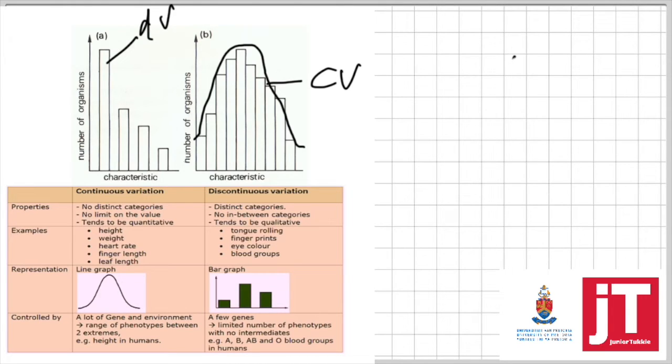Like in the example is blood groups: you either have the blood group A allele or not. Height is an example of continuous variation. Here's my table and you can see all the examples and you can read it on your own.